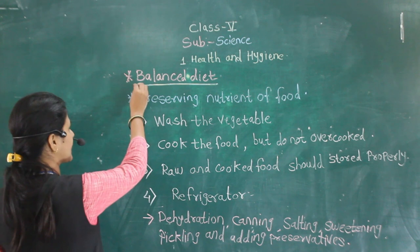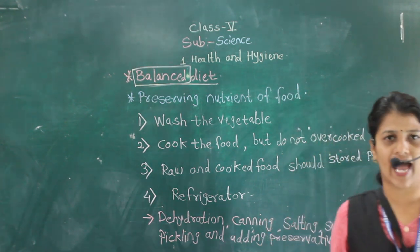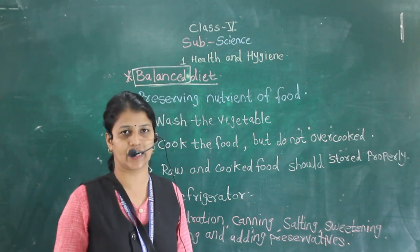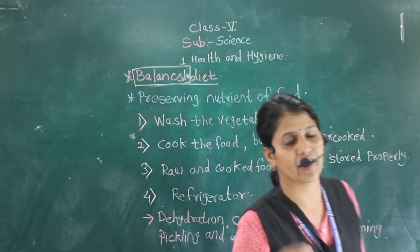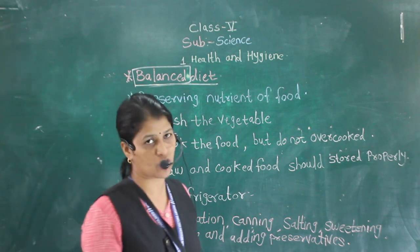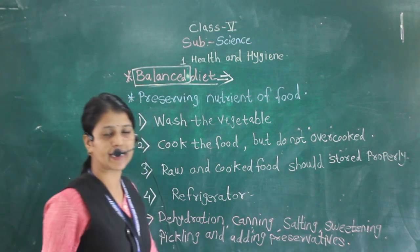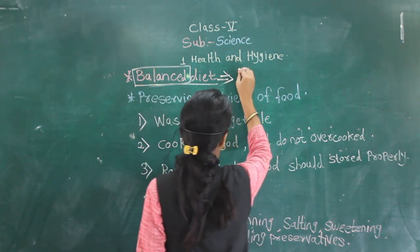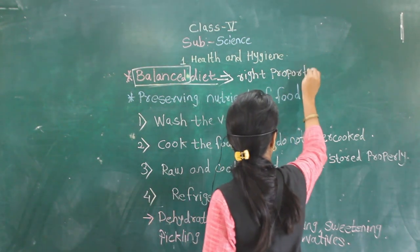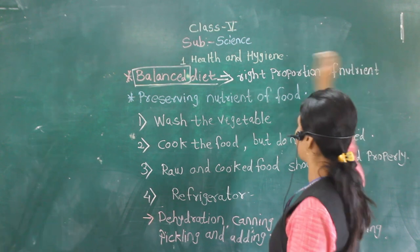What is a balanced diet? Balanced diet means the food you should have in the right proportion. A diet that contains the right proportion of nutrients is called a balanced diet.